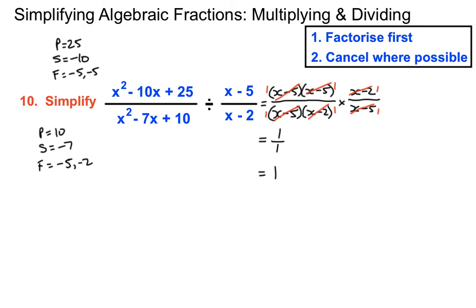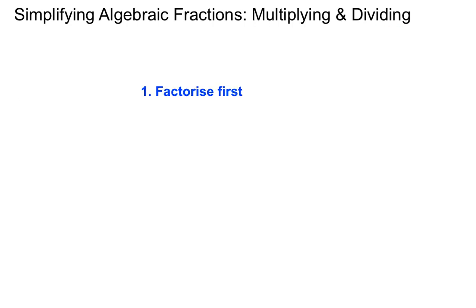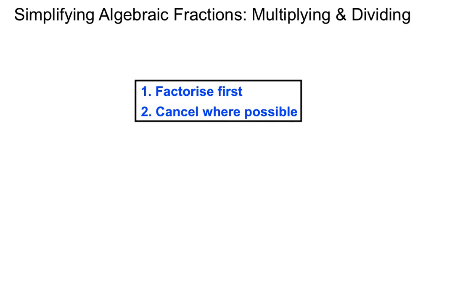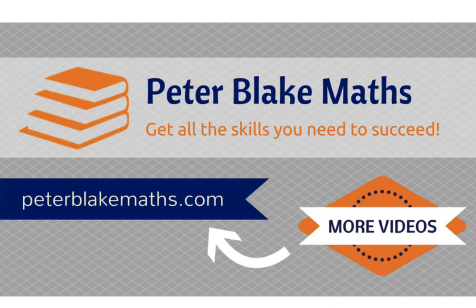That's the general idea: for simplifying algebraic fractions, factorise first and then see if you can cancel where possible. Be careful with your cancelling — put the little ones in — and any time there's a 1 left on the top, you desperately need to write it in; any time there's a 1 on the bottom you can ignore it. Massive examples there — I hope you've seen one of each type, and that should hold you in good stead for the future. All the best with your studies at www.peterblakemath.com.